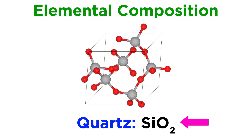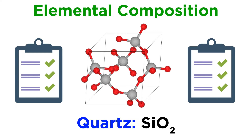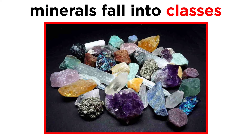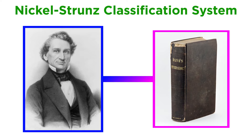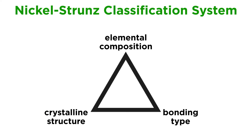Mineralogists use a mineral's chemical formula along with its crystalline structure to assign it a mineral class. Classes are a convenient way to group minerals together based on shared properties, making it easier for geologists to identify minerals and study rocks, especially in the field. The IMA uses the nickel-strunz classification system, heavily based on Dana's original classification scheme, which divides all minerals into specific classes based on their elemental composition, crystalline structure, and bonding type.